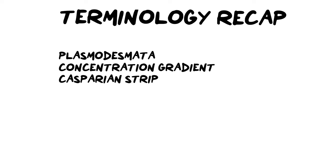To finish off, here is a quick terminology recap. There are three key terms for this section. First, plasmodesmata — these are the little connection points between neighboring plant cells where they share cytoplasm. Second, concentration gradient — a very important term to use in your answers. Don't just say 'an area of high and an area of low'; use the phrase concentration gradient, which is when you are moving substances down or against a gradient either passively by diffusion or actively via active transport. Third, the Casparian strip — this keeps water within the cells. Without the Casparian strip, water would not be affected by the salts or the concentration gradient, and we wouldn't maintain a constant flow of water into the xylem.